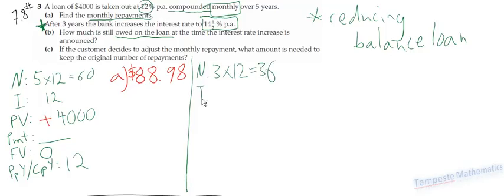The interest rate, now, it hasn't changed yet. So, the original interest rate is what we want, and that is still 12. PV, that's the initial amount, is still going to be 4,000.